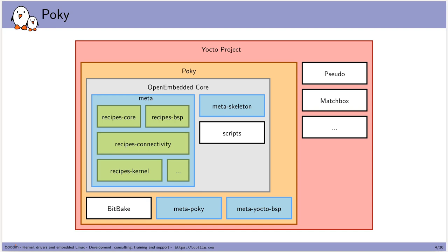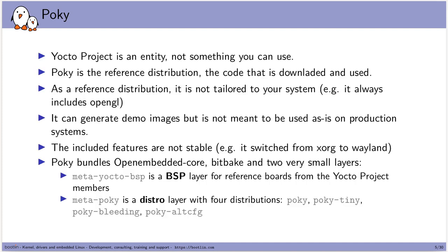Poky is composed of OpenEmbedded-Core and BitBake, plus two small layers: meta-poky and meta-yocto-bsp. Poky is the reference distribution — it is not really tailored to your embedded system. For example, it will always include OpenGL even if your SoC doesn't have a GPU, so not only will you waste time building OpenGL support, but you may also generate an image that won't work for your platform.